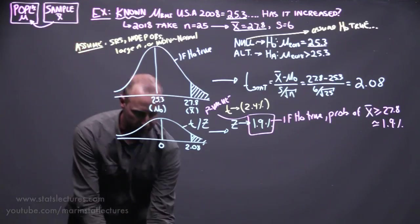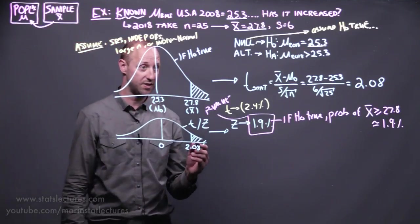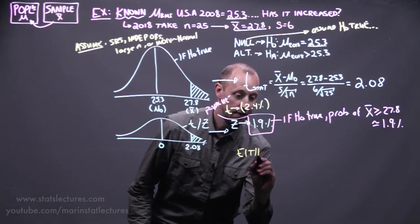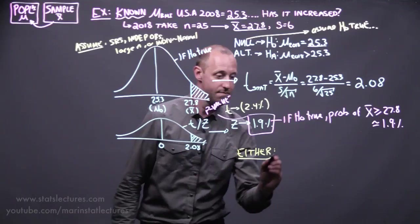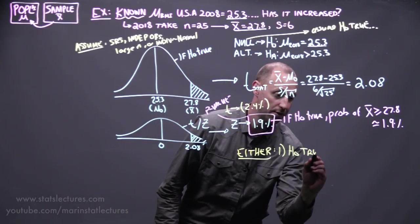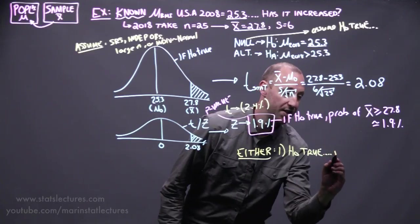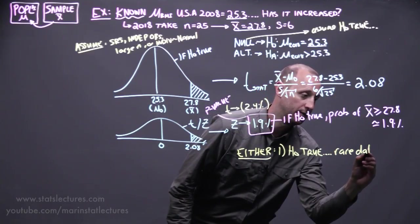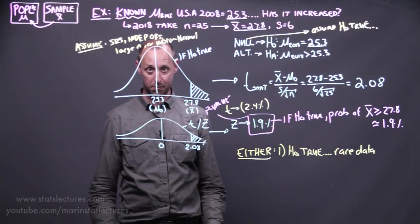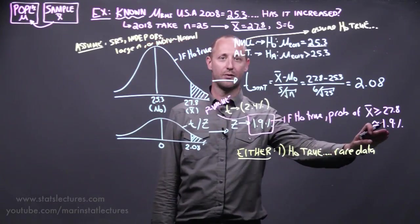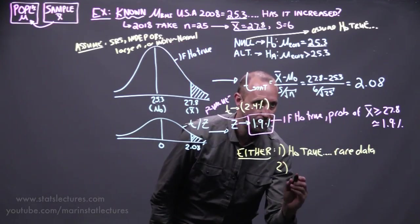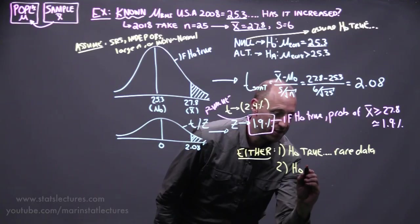So, what we can conclude from there is that one of two things must have happened. Either the null hypothesis is true, and we just ended up with some rare data. So the null is true, there has been no change in BMI, mean BMI, and we just got a rare sample that's going to show up about 2% of the time, or the null hypothesis is not true.